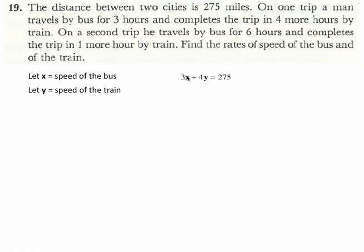So the velocity of the bus times the three hours that the person spent on the bus, the speed of the train times the four hours the person spent on the train has to equal the 275 miles. For the second trip, the person spent six hours on the bus and one hour on the train. And so six times the speed of the bus plus one times the speed of the train is equal to 275.